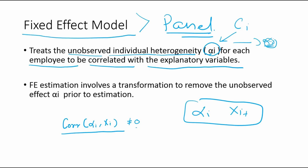The obvious question is: how do we know whether this correlation is zero or non-zero? We will see that later. The estimation involves transformation to remove the unobserved effect, pretty much like the first difference estimation. Here also, we are going to get rid of the alpha_i term — the unobserved effect — before doing the estimation.